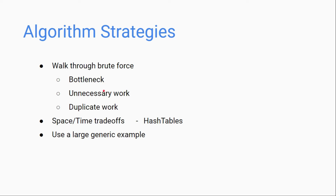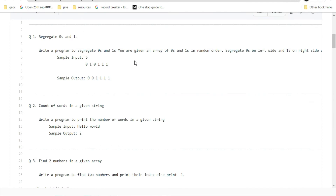Check if our algorithm contains any unnecessary or duplicate work; if yes, remove it. Next, look at space and time complexities. The very first approach to any solution should be the hash table, as it has constant time lookup. After writing the solution, check for large and more generic inputs — this will remove the possibility of errors. Remember these strategies and now let's jump into previous year problems.